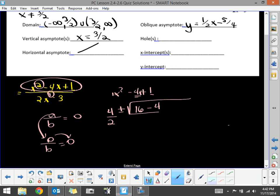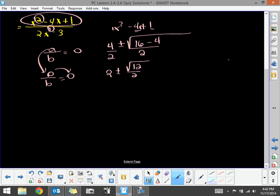So it's really 2 plus or minus the square root of 12 divided by 2. The square root of 12 can be written as the square root of 4 times 3, which is 2 times the square root of 3, all over 2, which will reduce to 2 plus or minus the square root of 3. Now, these are the locations of your x-intercepts.